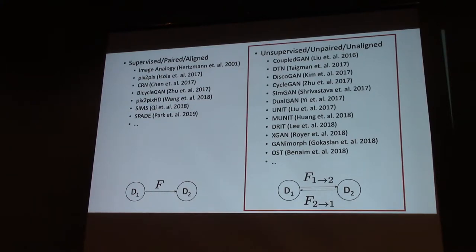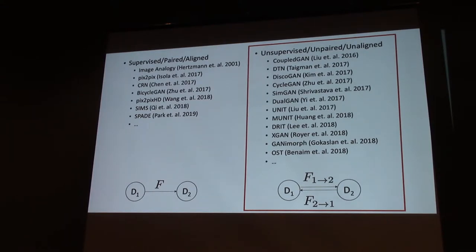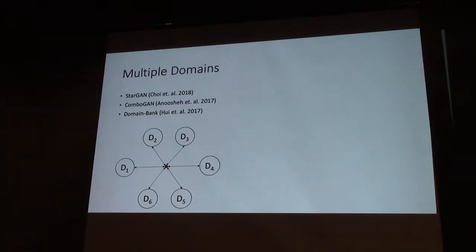Today's focus will be more in this unsupervised flavor. You can also generalize image translation to multi-domains. StarGAN is probably one of the more popular works in this space. In StarGAN, they consider multiple domains simultaneously, with a shared representation between all domains. To translate an image from D1 to D3, you first encode to this shared representation and then map from there.